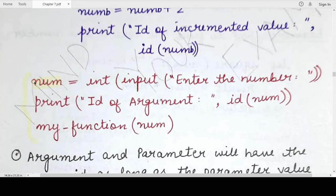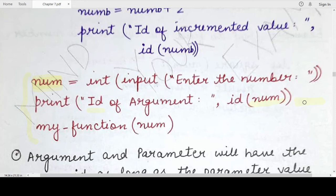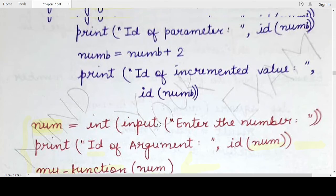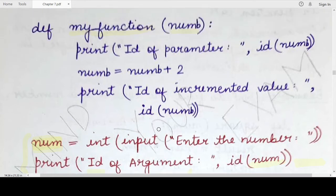We have taken a value from the user and this value is stored in the variable num. Since we will be using it as the argument, before passing it as an argument, we are printing the identity of this particular variable num using the id function — id(num). This print statement will return a string of digits, and we need to check whether when we print the id of the parameter, it is the same or changes over time. In the next statement, we are making the function call, specifying the function name my_function and passing the num variable as the argument.